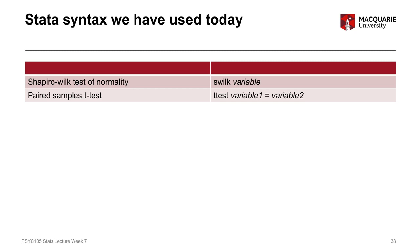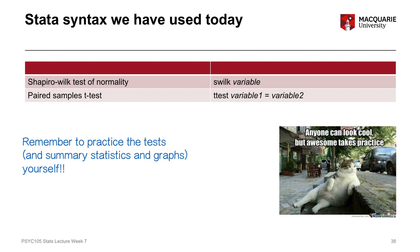This slide summarizes two new Stata commands from this week: the Shapiro-Wilk test of normality, used to test the normality of the distribution of scores, and the paired samples t-test itself. A note: the syntax I give you is not just to write down but to practice yourself. All the datasets used in the lectures are available online, and the best way of learning is to get your hands dirty — run the tests yourself to see if you get the same results.